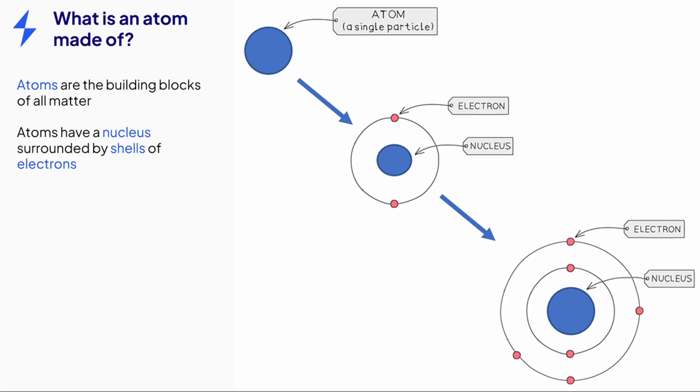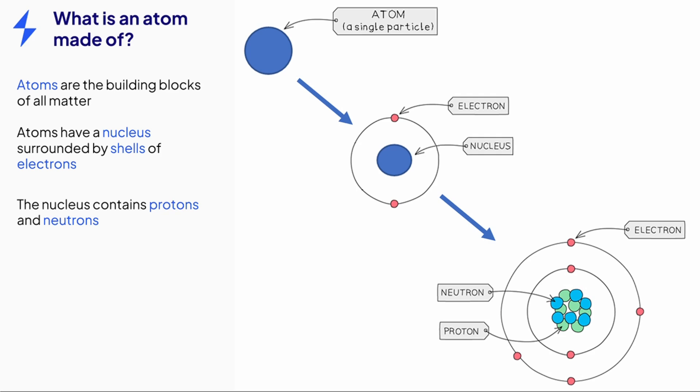In diagrams, electrons are commonly shown as dots or crosses. The nucleus contains two different subatomic particles, the neutrons and protons.